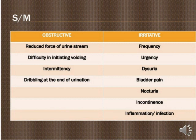The second type is irritative symptoms: frequency — the person feels the urge to urinate again and again; urgency — also not a good sign for any person; dysuria — difficulty or pain during urination; blood or pain — because urine is not properly expelled due to urethral narrowing; and nocturia — the urge to urinate at night.